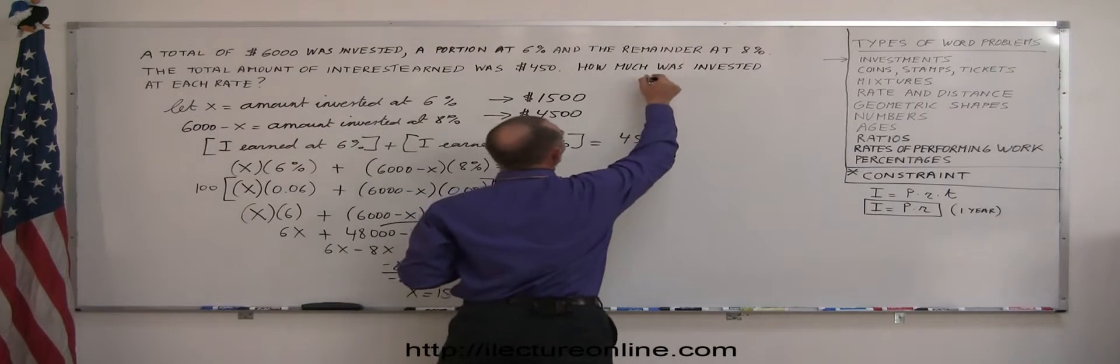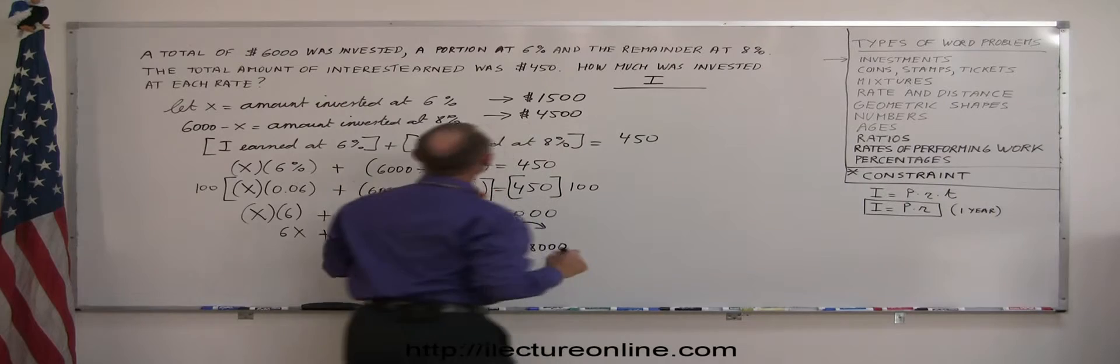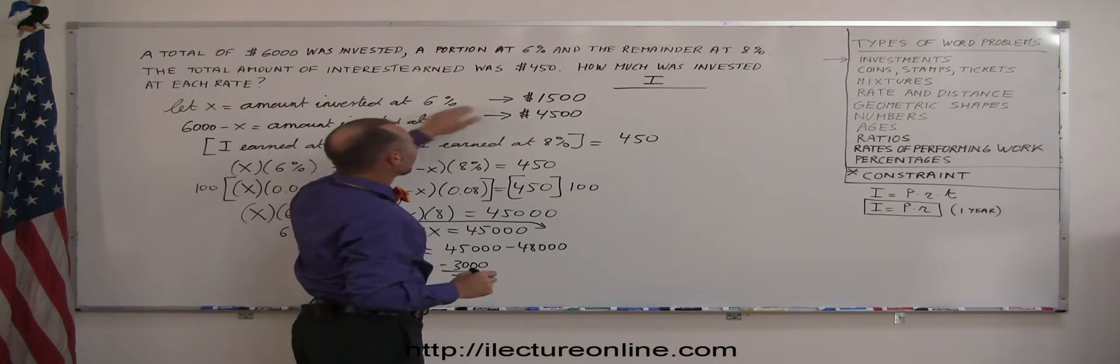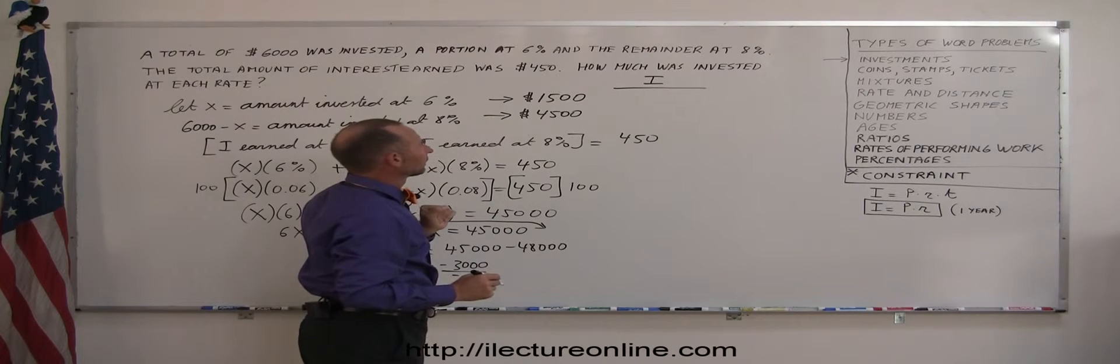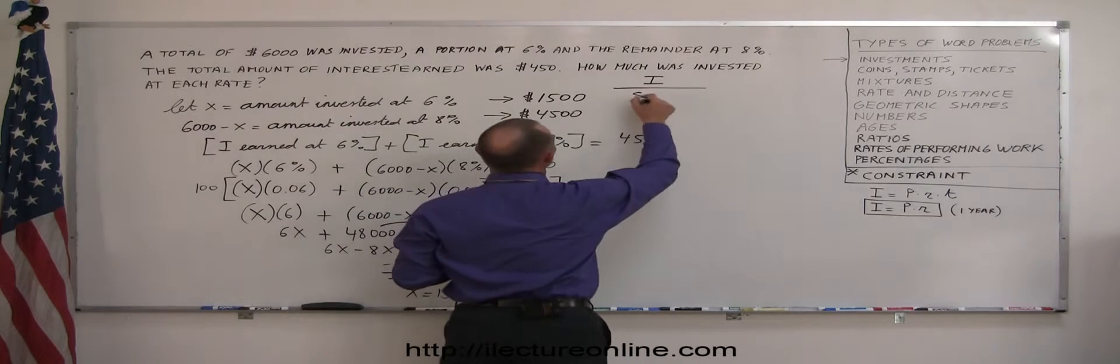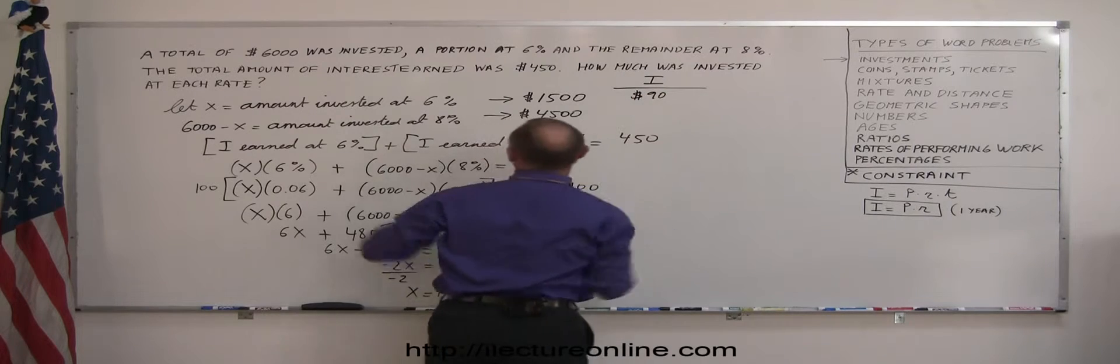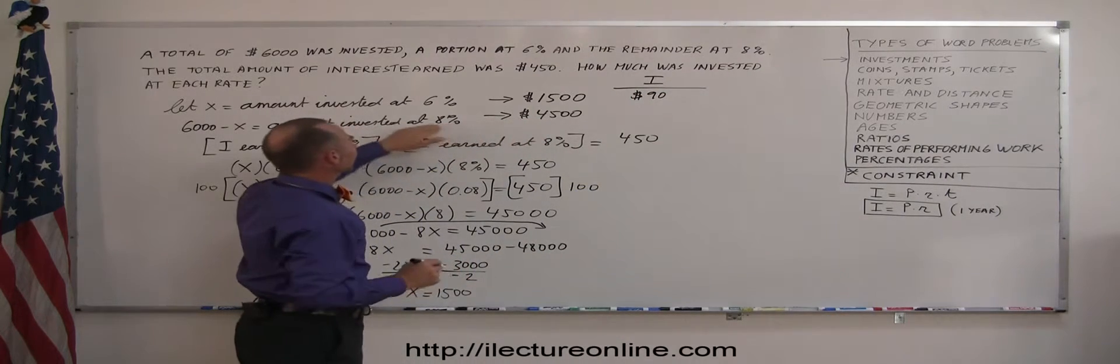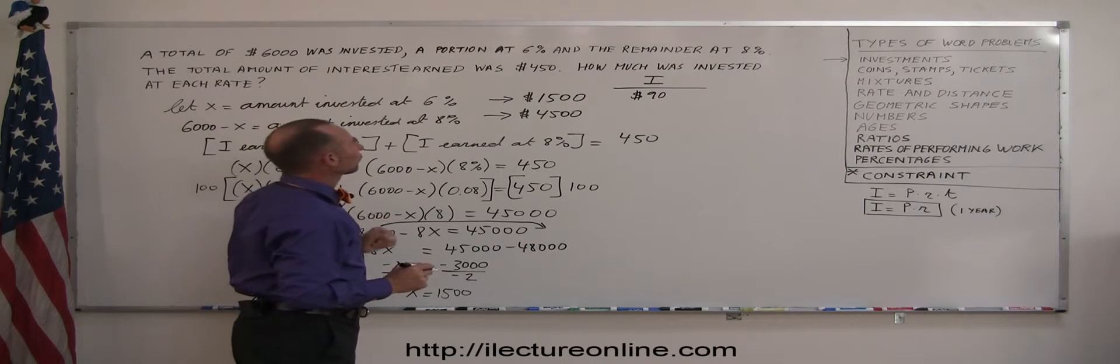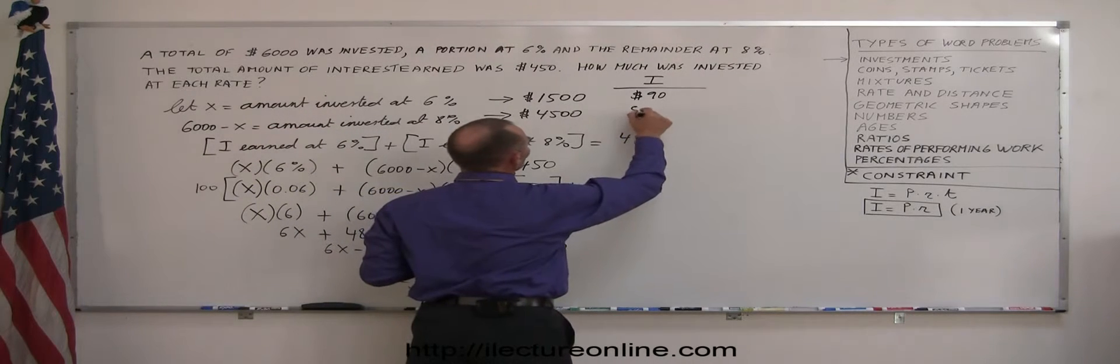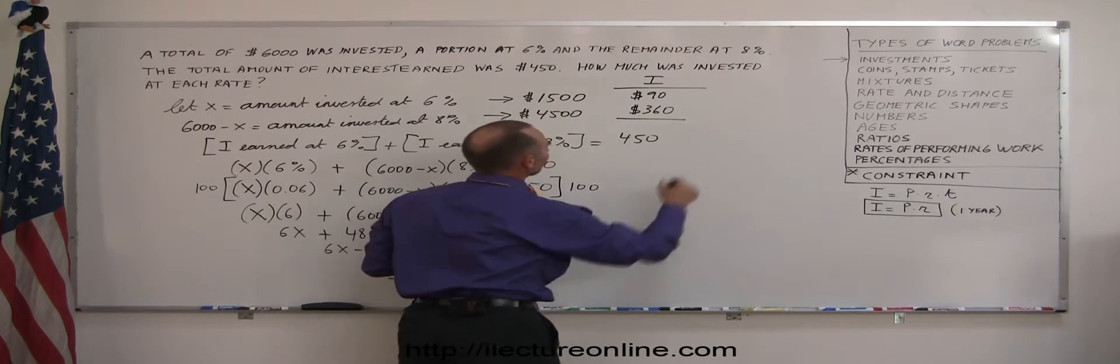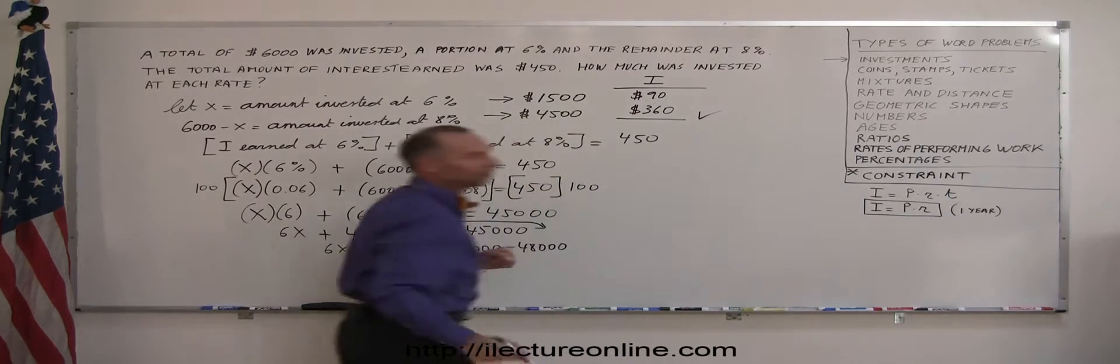how much interest did we earn in each case. Okay, if I invest $1,500 at 6%, that will earn me $90. And if I invest 4,500 at 8%, that gives me $360. And does that add up to 450? It certainly does. So I did it correctly.